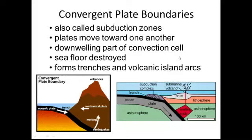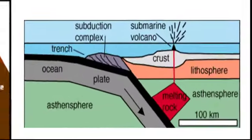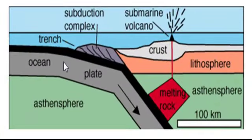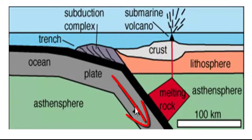The second type is a convergent boundary. A convergent boundary is where plates converge or move toward one another. When one plate meets another plate, you'll see that one of the plates gets forced down underneath.